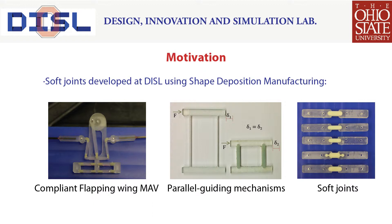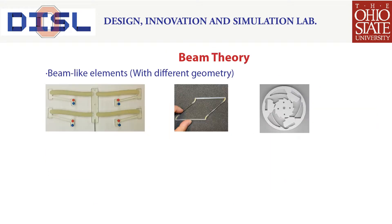Our aim is to come up with models that accurately predict the behavior of similar compliant elements. Using PRB models is a computationally inexpensive approach to achieve this task, as compared to using beam theory or finite element analysis. Most compliant mechanisms take advantage of beam-like elements for achieving the required motion, as can be seen in the three figures shown here. Note that the beams shown are of varying geometry and function, and a beam theory approach is needed that covers all these geometries.